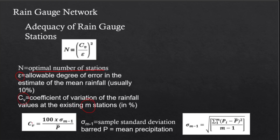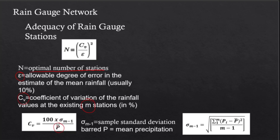To calculate CV, we have 100 multiplied by the sample standard deviation. Take note: this is the sample standard deviation, not the population standard deviation. That's why we use M minus 1 in the denominator, not M. And barred P is the mean precipitation, or the average of the data set.